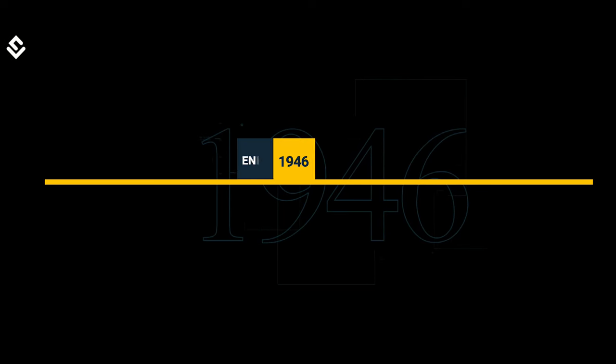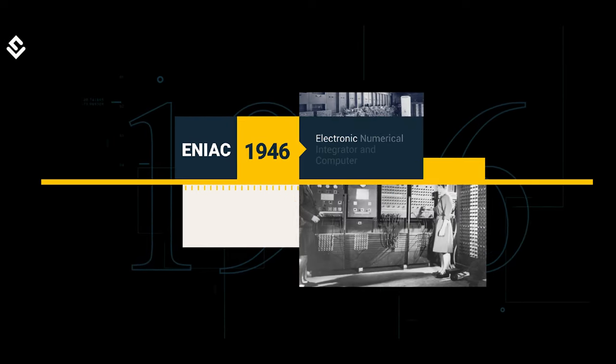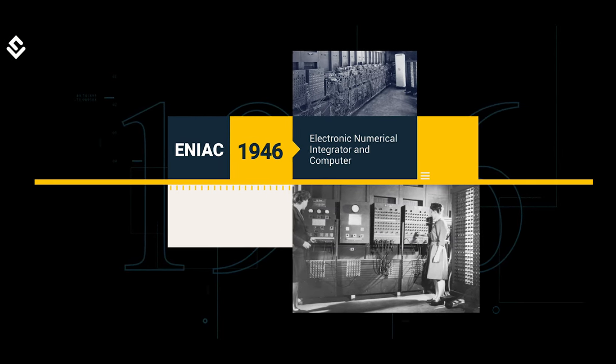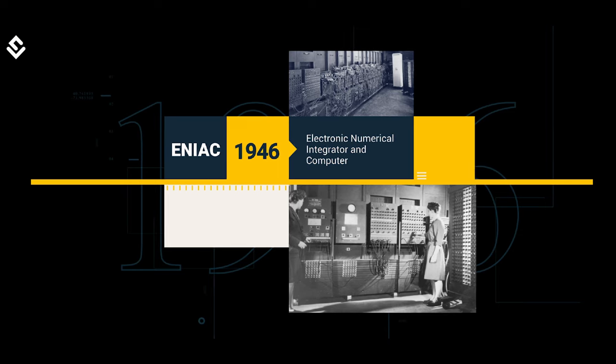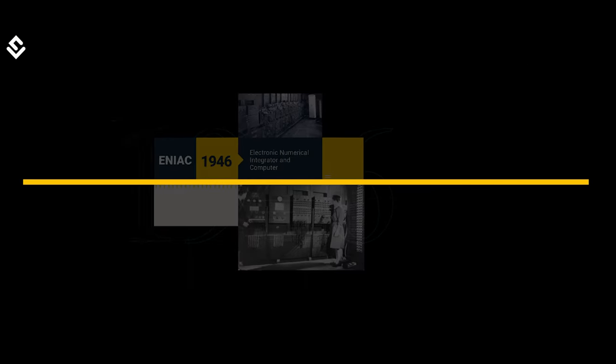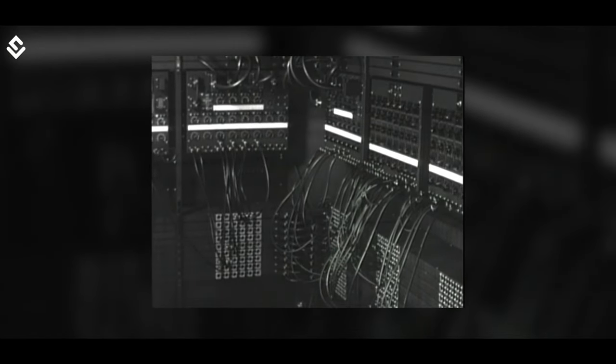Later, the first all-digital electronic computer was produced during World War II. Because of the heavy calculations required in building the nuclear weapon, a more efficient computing machine was required. In 1946, a new device — Electronic Numerical Integrator and Computer, ENIAC — was completed. It was a fully digital computer and used vacuum tubes for its functioning.